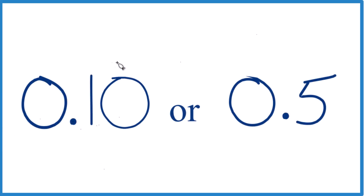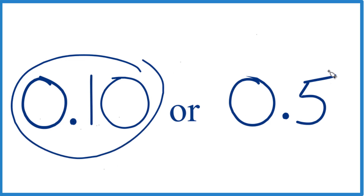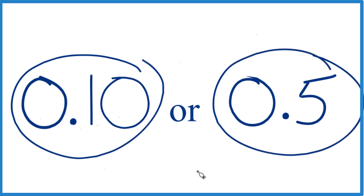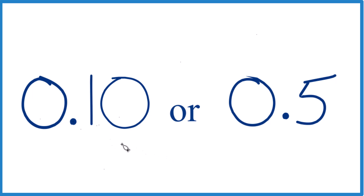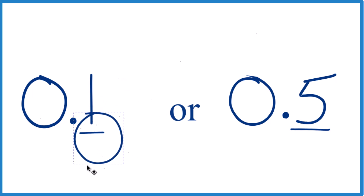Which one of these fractions, 0.10 or 0.5, is larger? Here's the way you should look at this: go to the tenths place — that's the first number after the decimal. Here we have 1; over here in the tenths place we have 5. Five is greater than one, so 0.5 is greater than 0.10, which you can consider to be 0.1 — it has the same value.